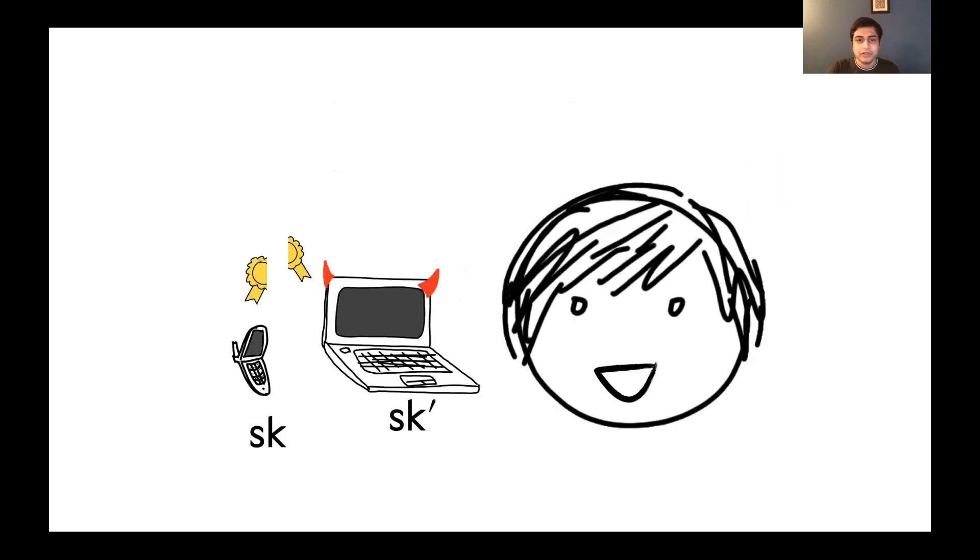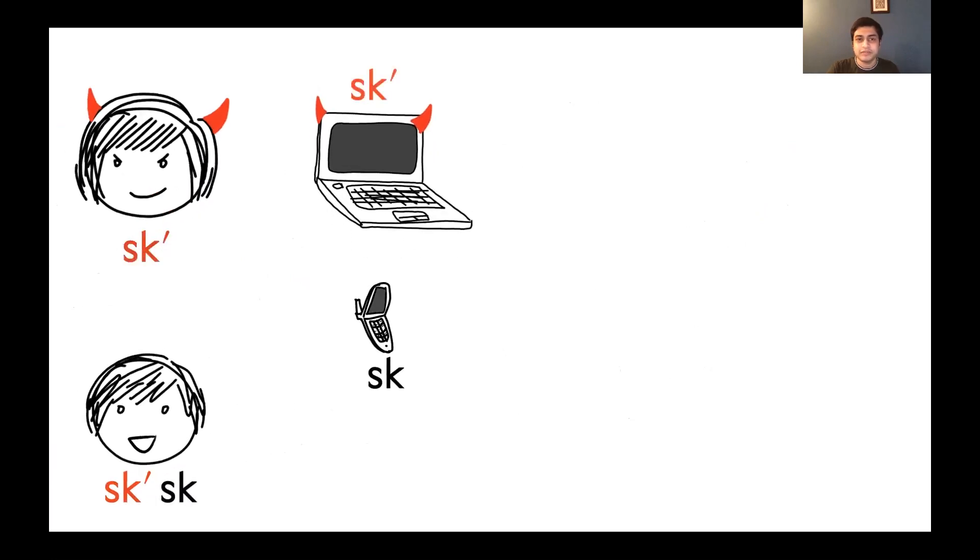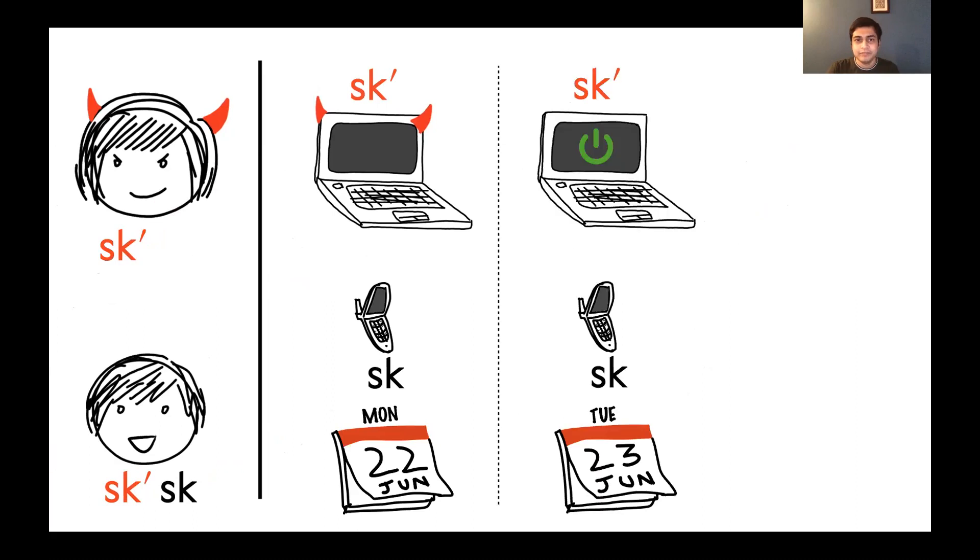So let's return to our friend Bob from earlier. The story doesn't end with the compromise of his secret key, or with the compromise of one of the devices. Let's say that the attacker steals his signing key fragment on his laptop on a Monday. And on a Tuesday, Bob resets his devices so that the attacker is kicked out of the laptop.